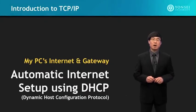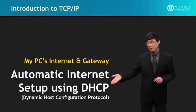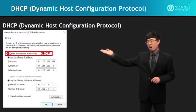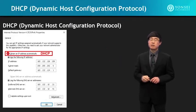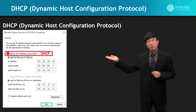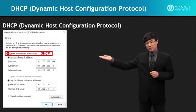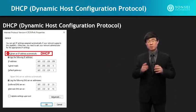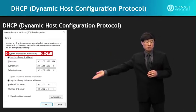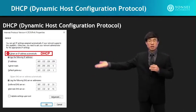In this lecture, we're going to study about automatic Internet setup using DHCP — Dynamic Host Configuration Protocol. When you select the automatic mode option, you're selecting DHCP. It's not written as DHCP, but that's the technology that makes it possible. DHCP does all of those configurations automatically — it receives all of the IP address information automatically from a DHCP server in the local network.